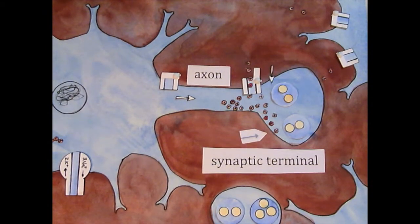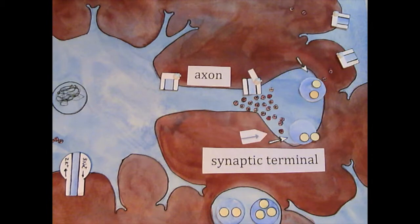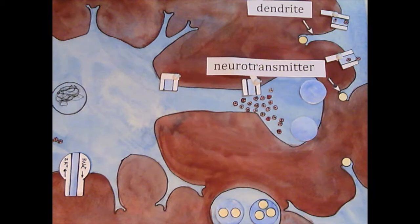Once in the synaptic terminal, the electric charge change causes calcium ions to enter the cell, which signals a vesicle full of neurotransmitters to fuse with the cell membrane, releasing neurotransmitters to the dendrite of the next neuron in the signal chain.